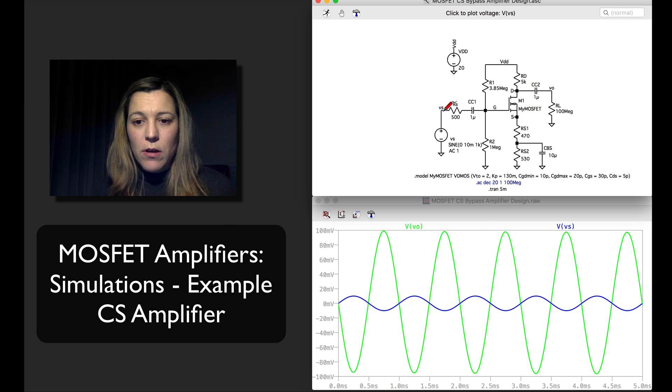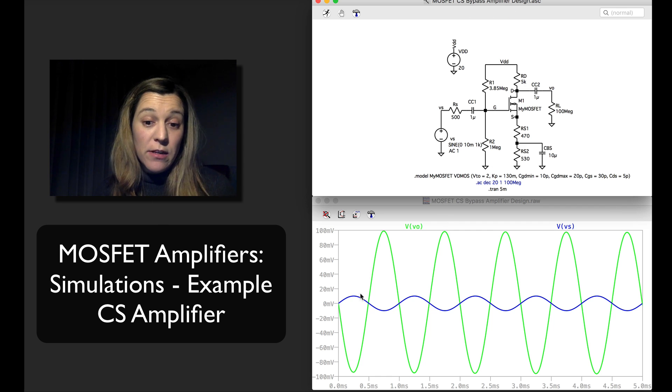Now I can verify the gain of my circuit. Again I have an input signal which is a 10 millivolt amplitude sine wave. My output signal Vout is inverted because it's an inverting amplifier.